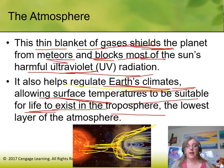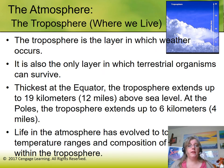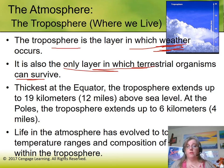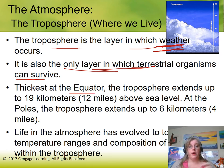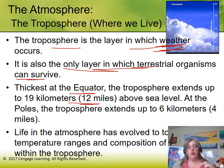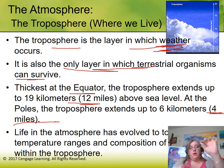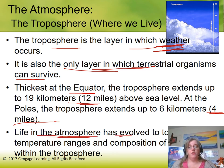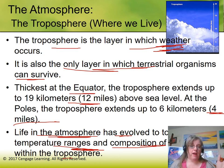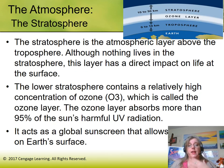The troposphere is the lowest layer of the atmosphere — this is where we live and where all weather occurs. It's the only layer in which we can live. The troposphere is thicker at the equator, about 12 miles, and thinner at the poles, about 4 miles. Life in the atmosphere has evolved to manage the temperatures and composition of gases within the troposphere.